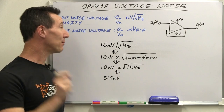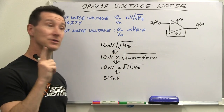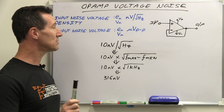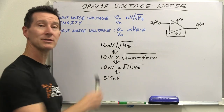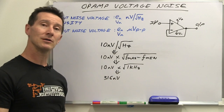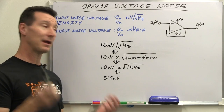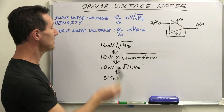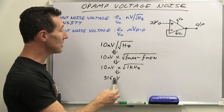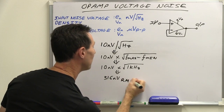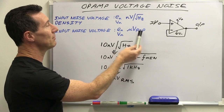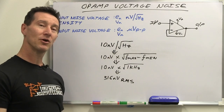So if you've only got a one hertz bandwidth, then your noise is going to be square root of one hertz, which is the same 10 nanovolts. But usually you're not going to be operating over a one hertz bandwidth. So let's look at a one kilohertz bandwidth. The formula then is F_max minus F_min — that's basically the bandwidth you're operating under. So if your circuit is operating from zero hertz up to one kilohertz, you've got a bandwidth of 1 kHz. 10 nanovolts times the square root of 1 kHz gives you a final value of 316 nanovolts. That's how much RMS noise is inherent in your op-amp.